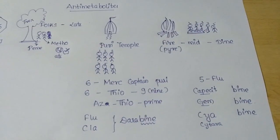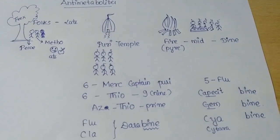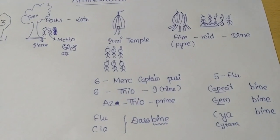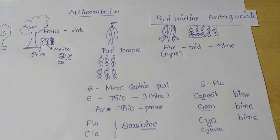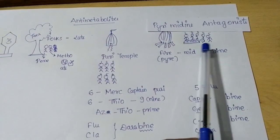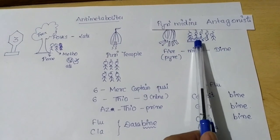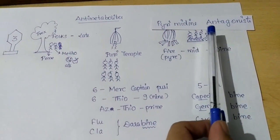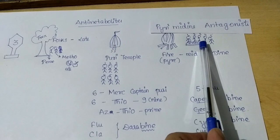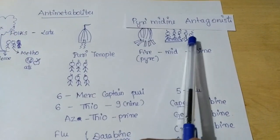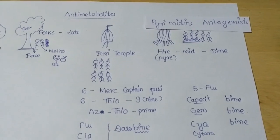Coming to the third subclass, we see fire with five people sitting around having dinner. This gives us the third subclass: pyrimidine antagonists — 'fire' representing pyrimidine. However, the fifth person is sitting on the periphery and not participating in the dinner, so there are only four drugs. The first drug starts with five because this person has a flu — so the first drug is 5-fluorouracil.